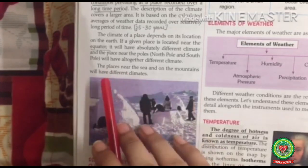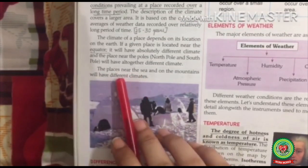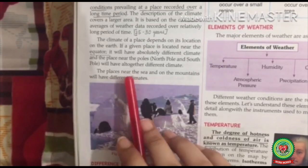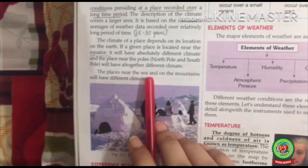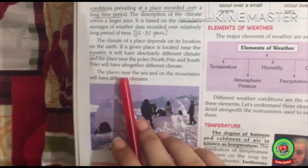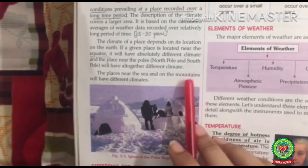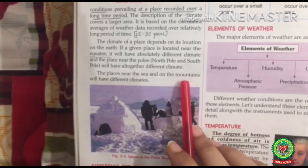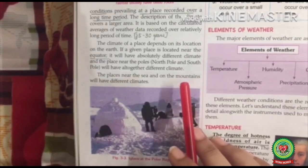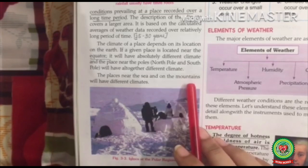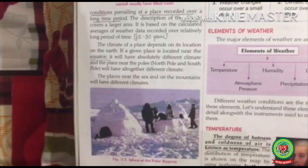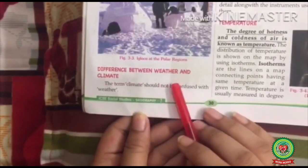Places near the sea and on mountains will have different climates. Places near the sea have moderate climate — neither too hot nor too cold. Places away from the sea have extreme climate, meaning very hot or very cold. On mountains, the higher we go the cooler it is — with an increase in height of 165 meters, there is a decrease in temperature by one degree Celsius. So the location of a place affects the climate.